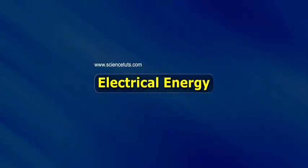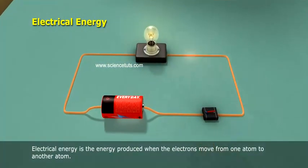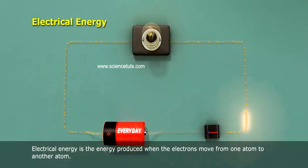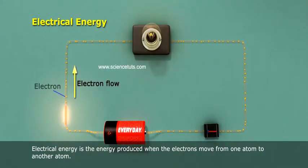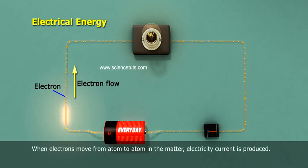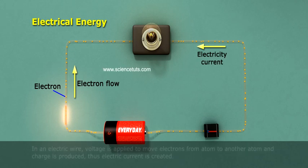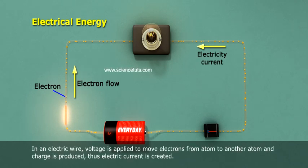Electrical energy is the energy produced when electrons move from one atom to another atom. When electrons move from atom to atom in matter, an electric current is produced. In an electric wire, voltage is applied to move electrons from one atom to another and charge is produced. Thus, electric current is created.